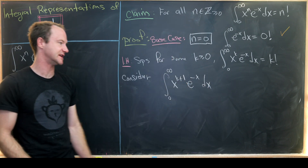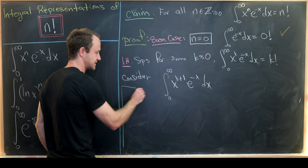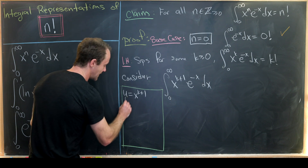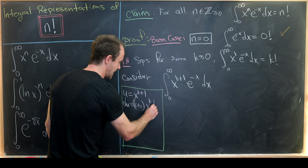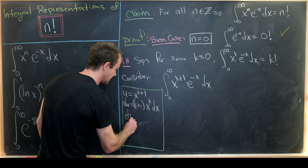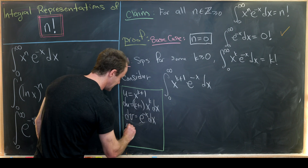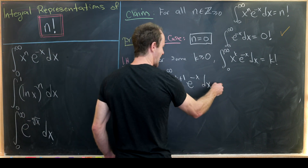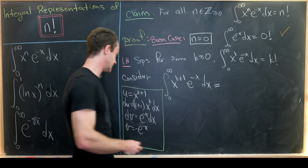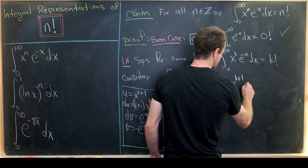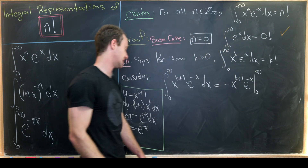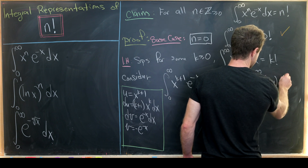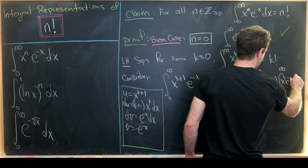Since this is a polynomial times a transcendental function, that's a standard integration by parts setup. We set u equal to x to the k plus one, making du equal to k plus one times x to the k dx. Then dv equals e to the minus x dx, making v equal to minus e to the minus x. This gives us u times v evaluated from zero to infinity — that's minus x to the k plus one times e to the minus x — plus k plus one times the integral from zero to infinity of x to the k, e to the minus x dx.